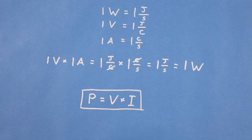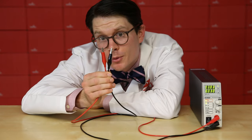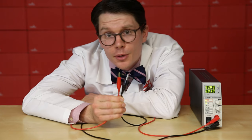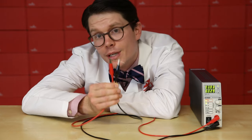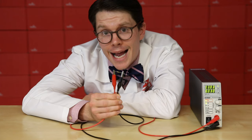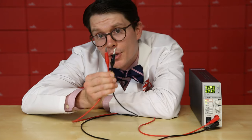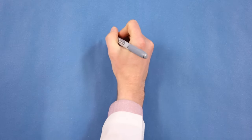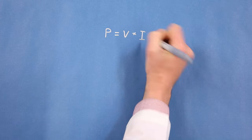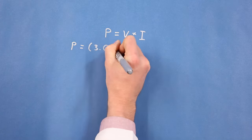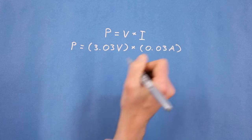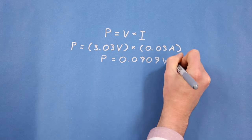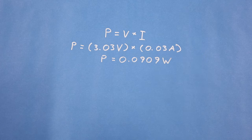So we can safely calculate electric power as voltage times current. I've hooked up a resistor to my power supply and cranked up the voltage to about 3.03 volts. We can see that about 0.03 amps are flowing through the circuit, and with that information we can calculate electric power. Using P equals V times I, we can plug in 3.03 volts and 0.03 amps. With some multiplication, we can see that the resistor is consuming 0.0909 watts.